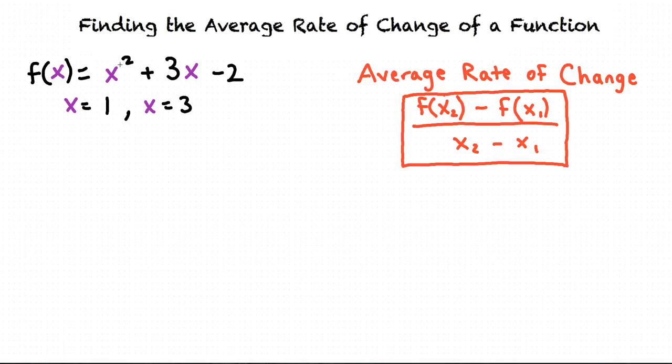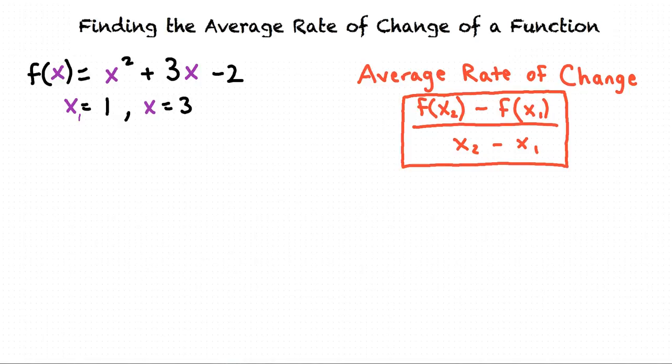The reason we use x1 and x2 is that we can tell the difference between our two x values. In our problem let's call x equals 1 x1 and x equals 3 x2. Oh I see. We give each x value a name so we can tell them apart.